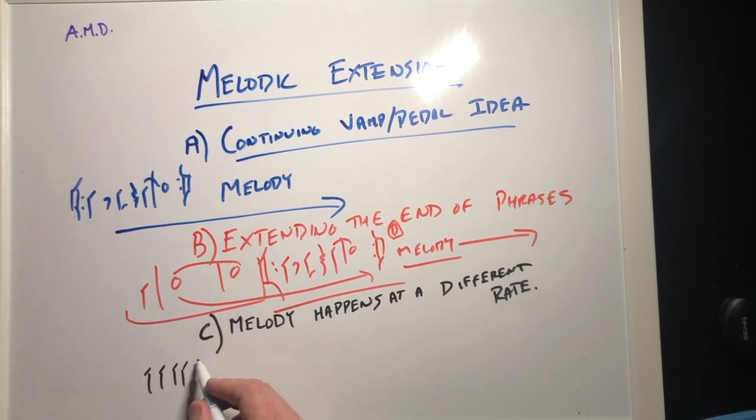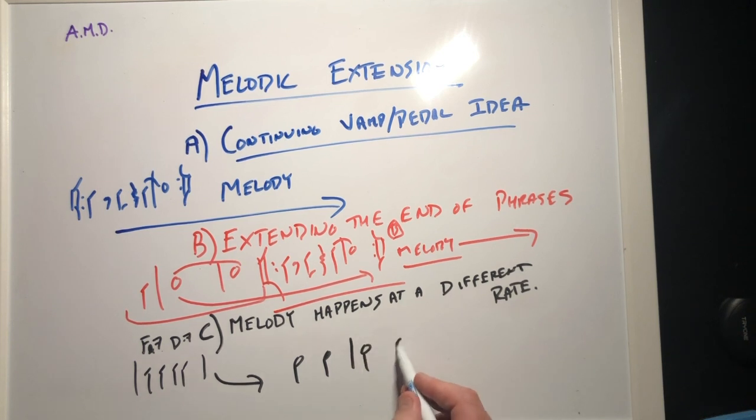In this case basically what happened is any note that used to be a quarter note was then actually made into a half note. In this example here that I'm writing you'll see this is a very similar analysis for how that might happen. Again this gives you flexibility to take a song that's normally a ballad and slower and make it sound as though the rhythm section can play faster while sort of maintaining the original rate.